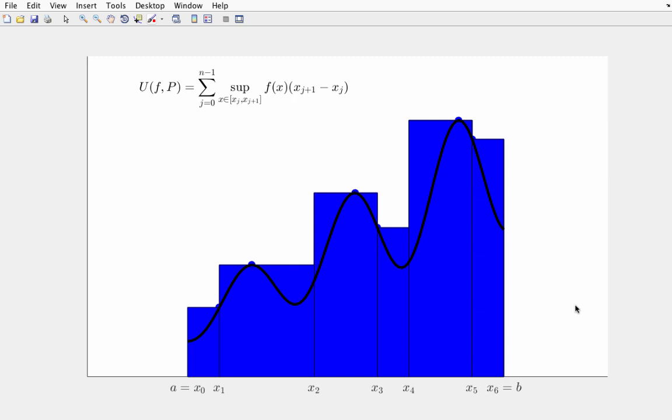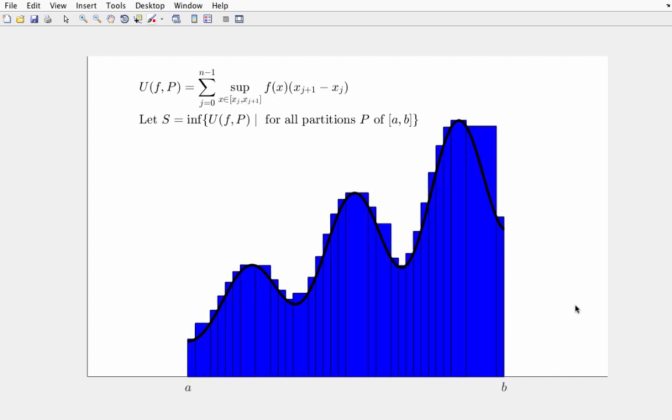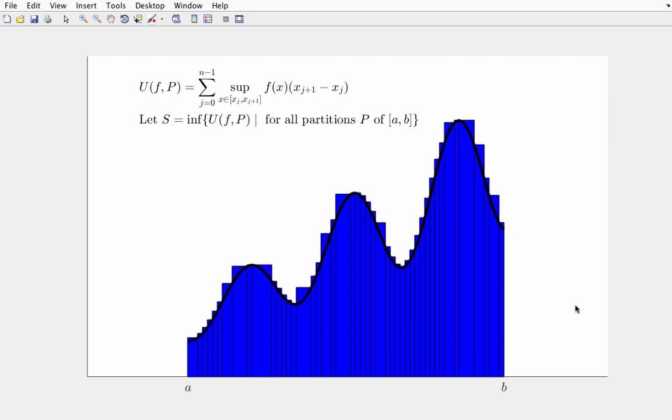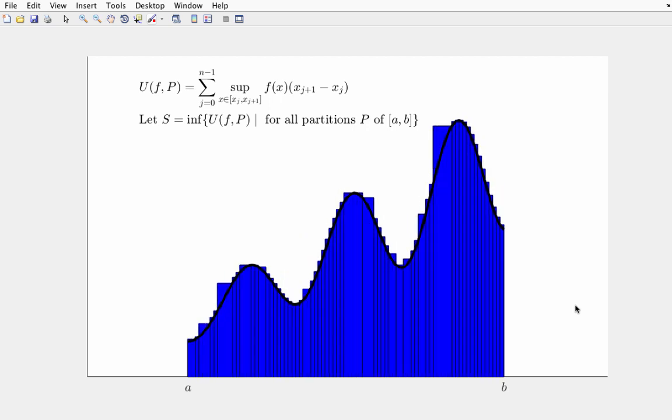Now, of course, this particular partition doesn't give us too great of an idea what the actual area under the curve is, if that area is a computable number. But imagine that we looked at every possible partition and took the smallest upper sum, or, to be precise, the infimum, that is, the greatest lower bound.